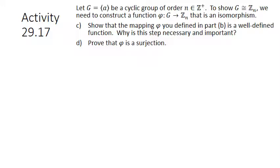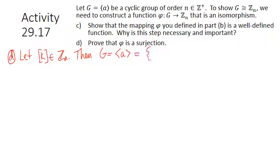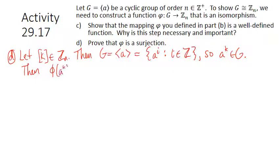Part D: prove that phi is a surjection. We want to take any element from the codomain and show there is an element in the domain mapping to it. Let the congruence class of K be in Zn. Since G equals the cyclic group generated by A, A to the K is also in G. Then phi of A to the K gives the congruence class of K — exactly the element we started with in the codomain. So phi is surjective.